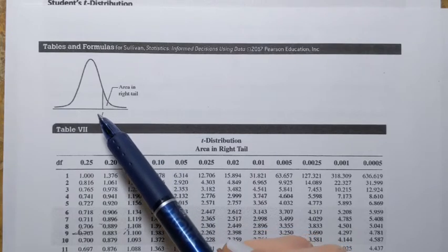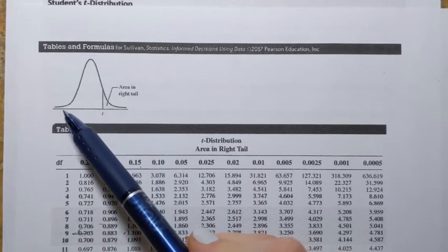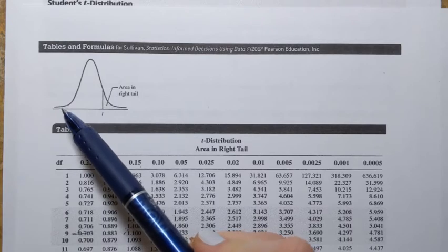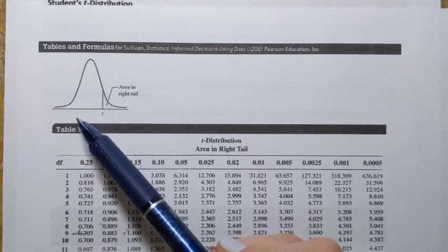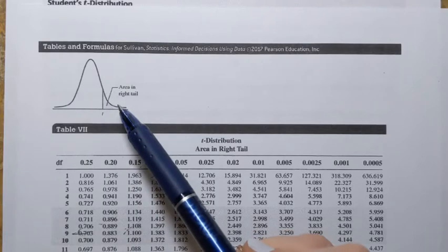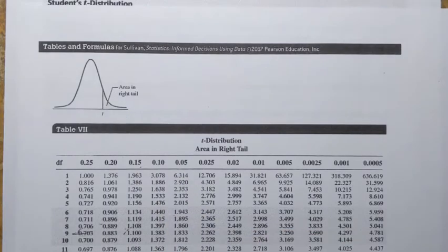So what's interesting is that the shape of the t-distribution changes depending on the sample size. So as sample size increases, the shape of the t-distribution gets closer and closer to the shape of the normal distribution.